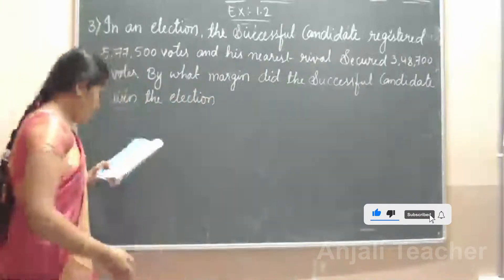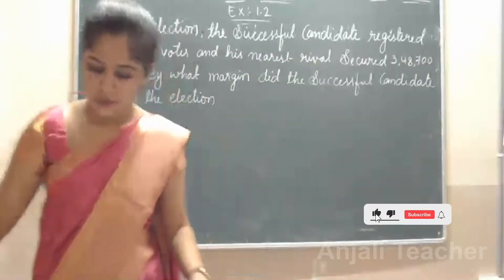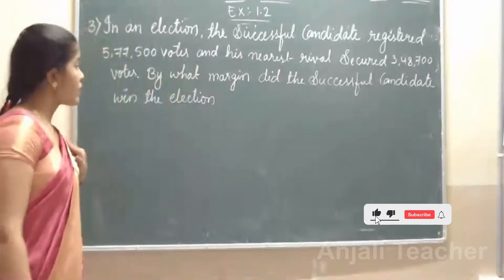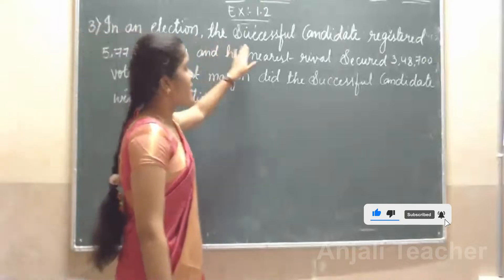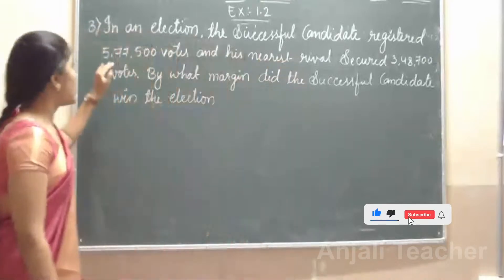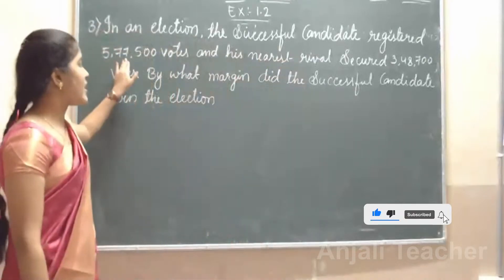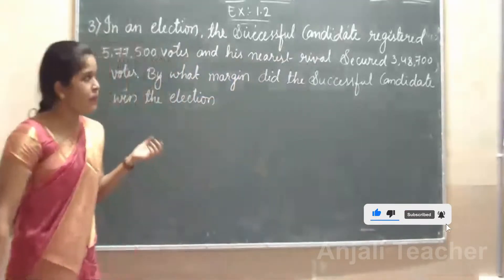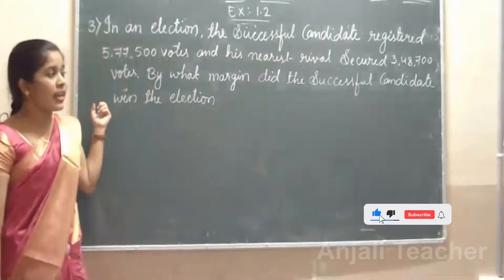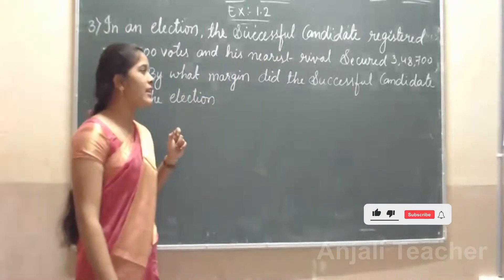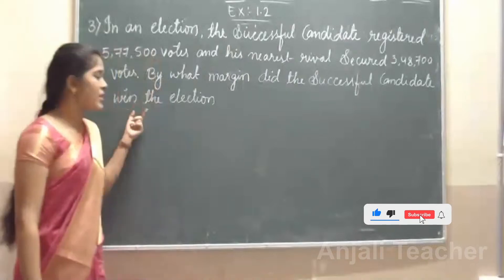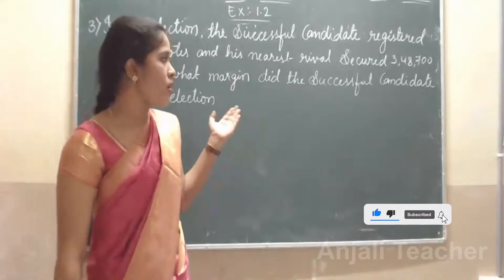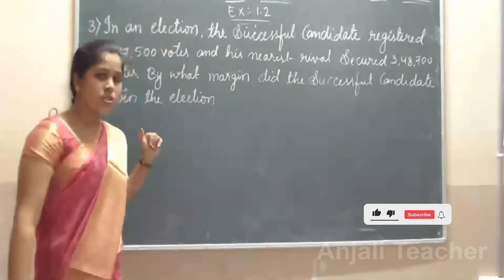See here. The question says: In an election, the successful candidate registered 5,77,500 votes, and his nearest rival — meaning the opposite party — secured 3,48,700 votes. By what margin did the successful candidate win the election? By what margin means by how much votes the successful candidate won.